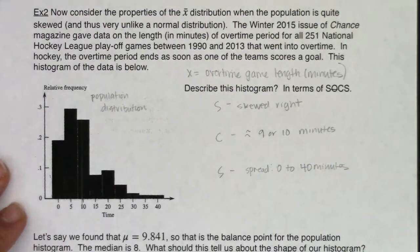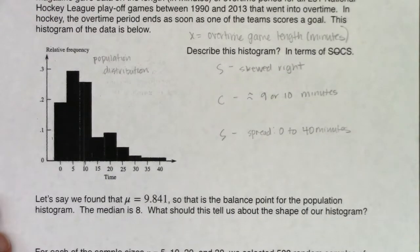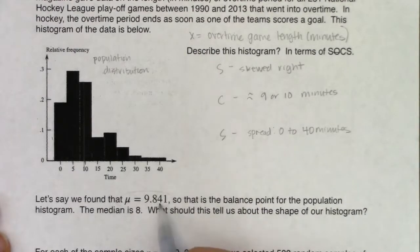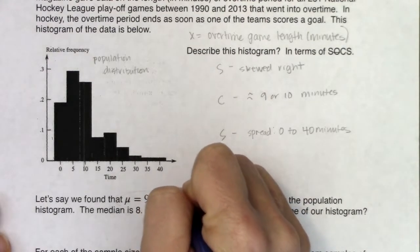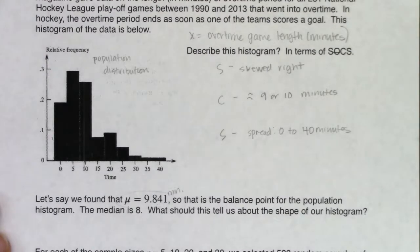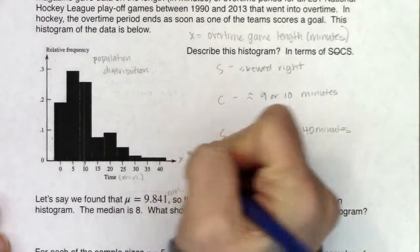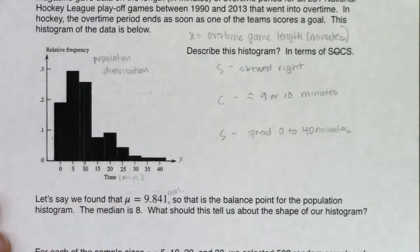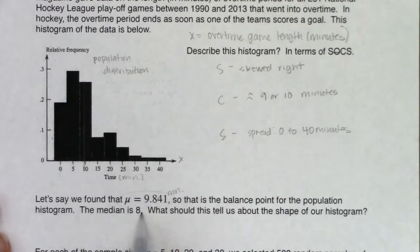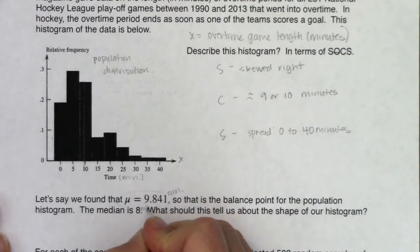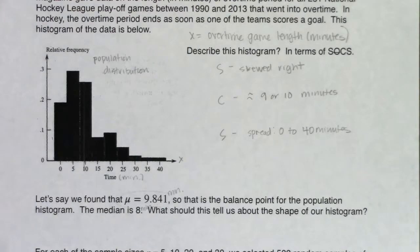Before we get into the sampling distribution, let's remind ourselves of something from chapter two. We found out that mu is 9.841 — the average was 9.841 minutes, because the units for all of your statistics are the units for your data. So I would have labeled the x-axis in minutes. That's the balance point for the population histogram. The median is 8 minutes.